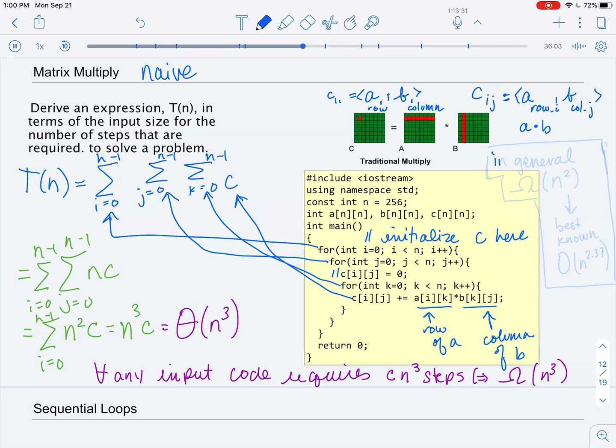But we can observe that this problem, in general, we know that matrix multiplication requires big omega of n squared. And why is that? At the very least, we have to be able to write our matrix C, which is the output matrix.